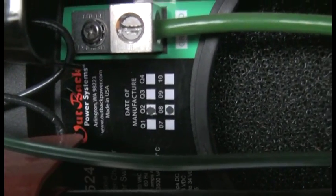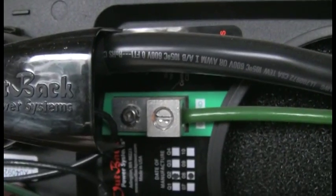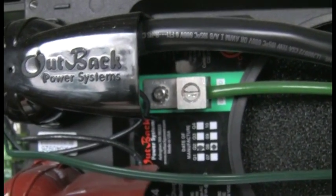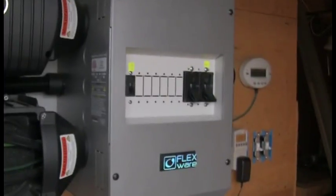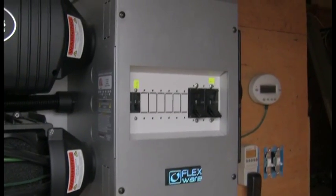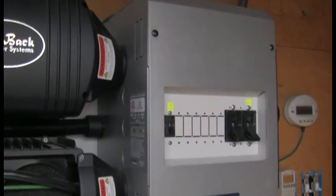Our date of manufacture was second quarter of 2008. Here's our ground lug, which takes us to the DC side ground bus bar. I'm not going to get into the DC side of the power panel in this video, but when I do the charge controller video, I'll take the cover off and show that to you.